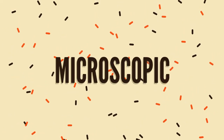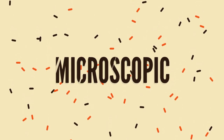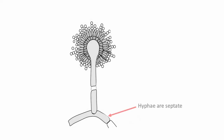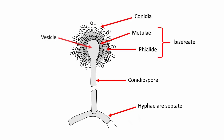Microscopic characteristics: Hyphae are septate with dichotomous branching. Conidiospores are variable in length, long and smooth. Phialides are biseriate, usually covering the entire vesicle, and form radiate heads.